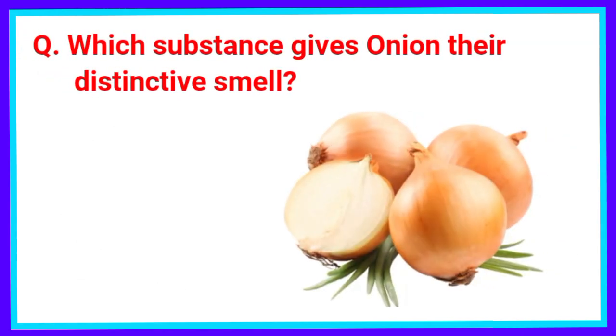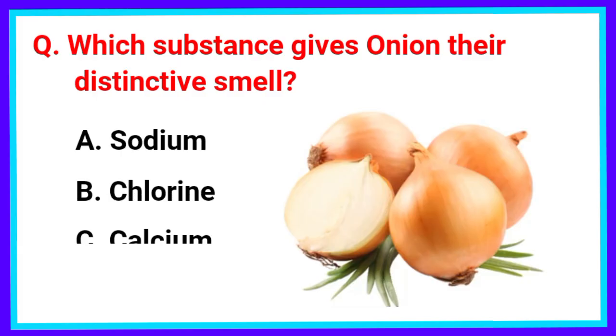Which substance gives onion their distinctive smell? The correct answer is Option D. Sulphur.